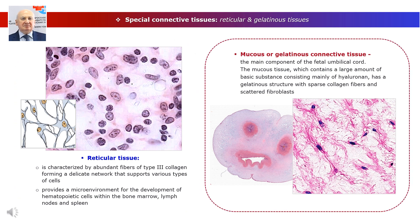Mucous or gelatinous connective tissue is the main component of the fetal umbilical cord. The mucous tissue contains a large amount of basic substance consisting mainly of hyaluronan, has a gelatinous structure with sparse collagen fibers and scattered fibroblasts. Histologically, mucous connective tissue largely resembles embryonic mesenchyme and is rarely found in adult organs, being similar to the tissue contained in the vitreous chambers of the eye and the pulp cavities of young teeth. Included among the fibroblastic cells are many mesenchymal stem cells, which are being studied for their potential in regenerative medicine.